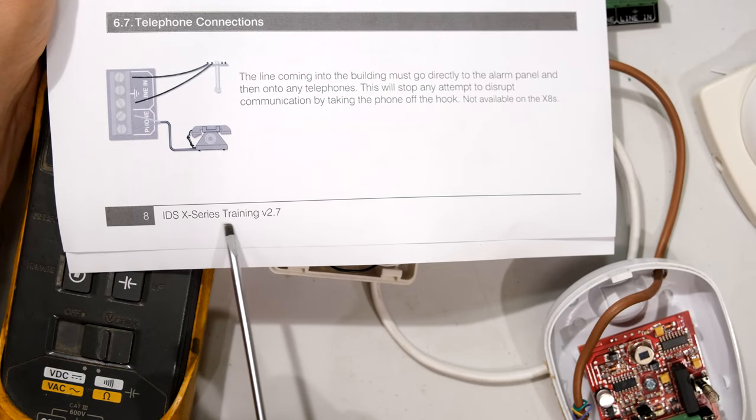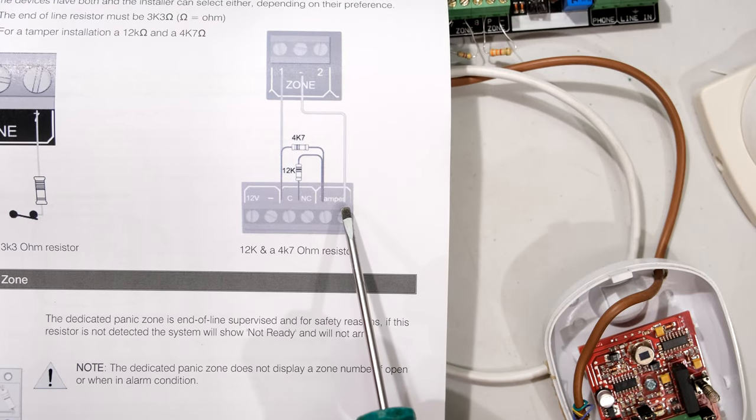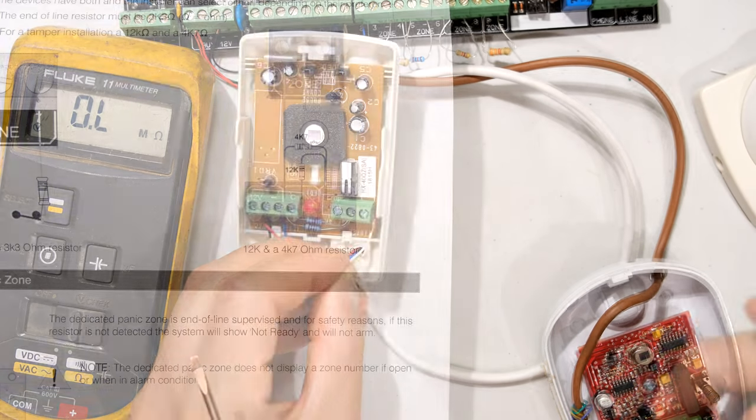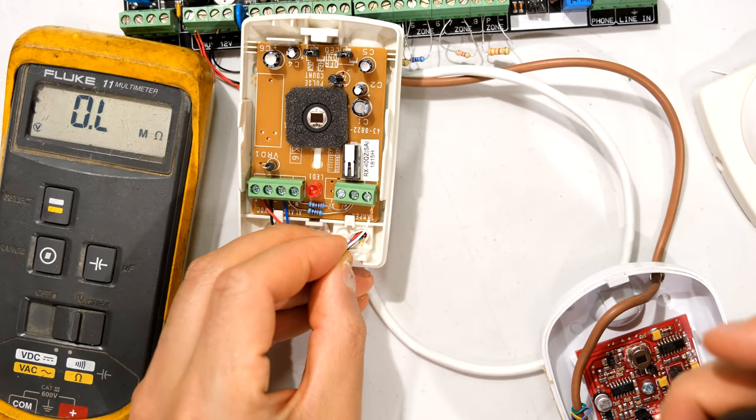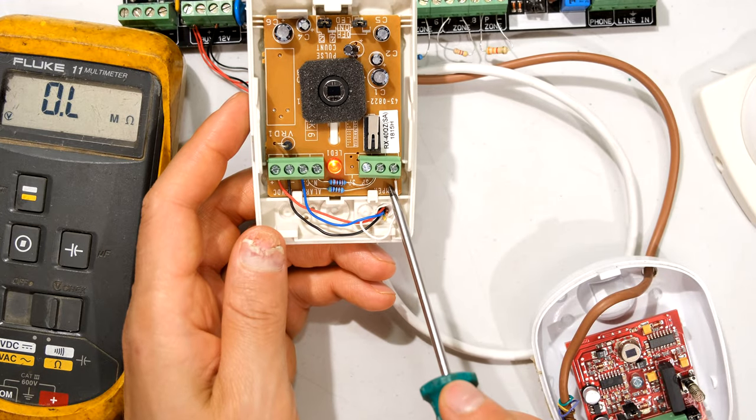Now going back to the IDS X series training manual version 2.7 you can see that it says from the output of the tamper goes back home to the zone to the negative. So there is my negative wire from the alarm panel. And that then completes the circuit.